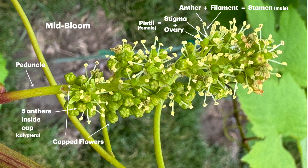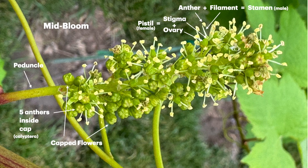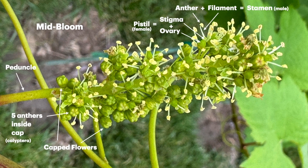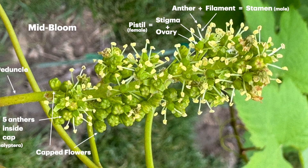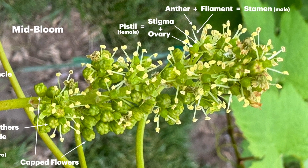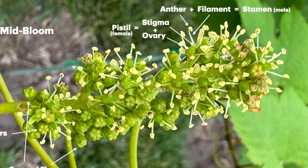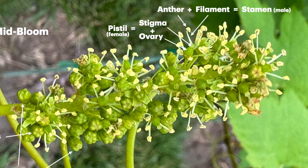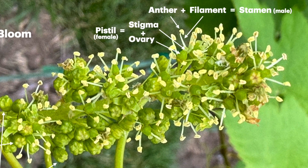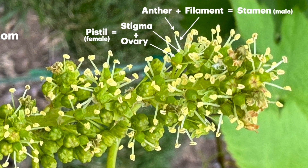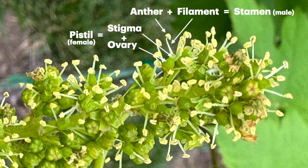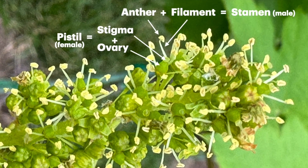We have a flower that consists of a male part, which is known as a stamen, which is made up of the anther and the filament. And the female part has actually three parts to it, but I've listed just two. There's a stigma, there's a style that attaches to the stigma, which then attaches to the ovary where the eggs are.